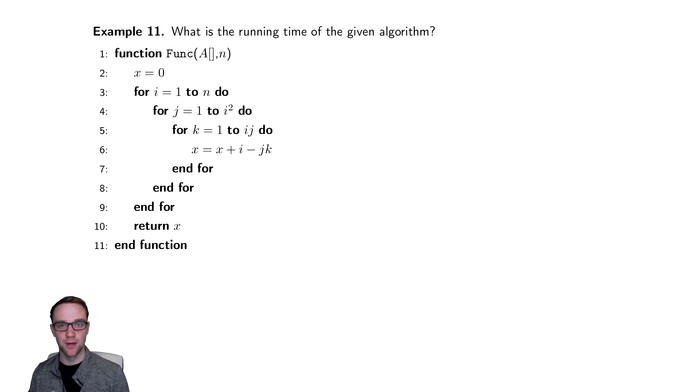Our next example is another double summation, this one just a little bit more symbolically messy than the previous. So jumping right into it, we write T(n) as the runtime so the reader knows.